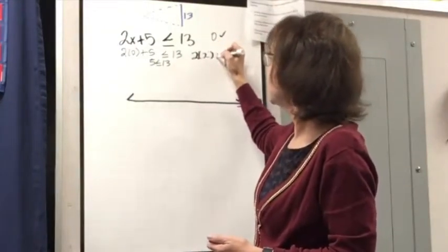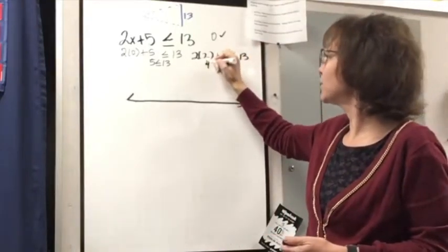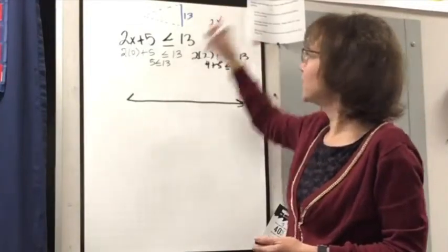So 2 times 2 plus 5 is less than or equal to 13. Well, 2 times 2 is 4. So 4 plus 5, yeah, that's less than or equal to 13. So I know 2 is going to work.